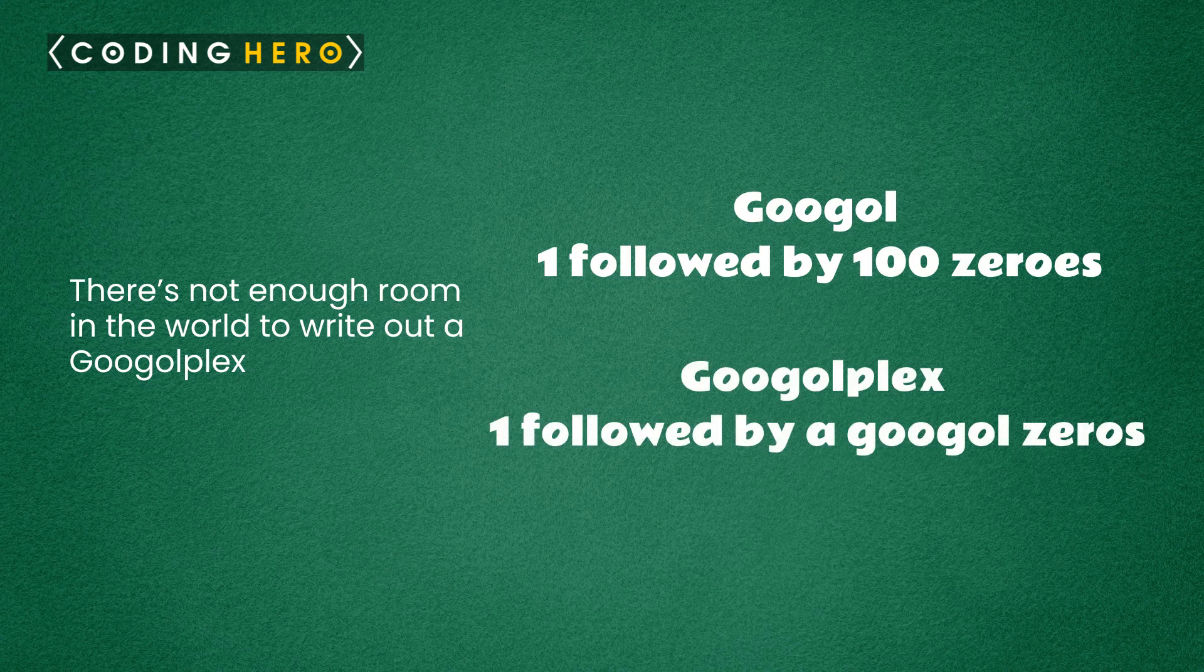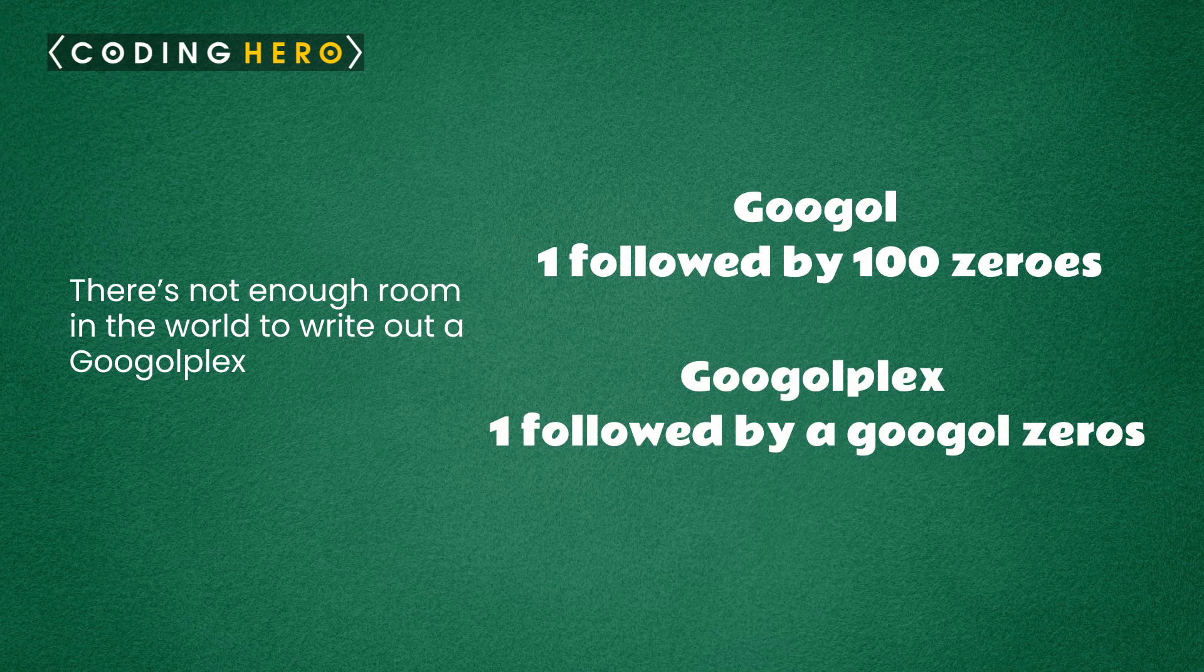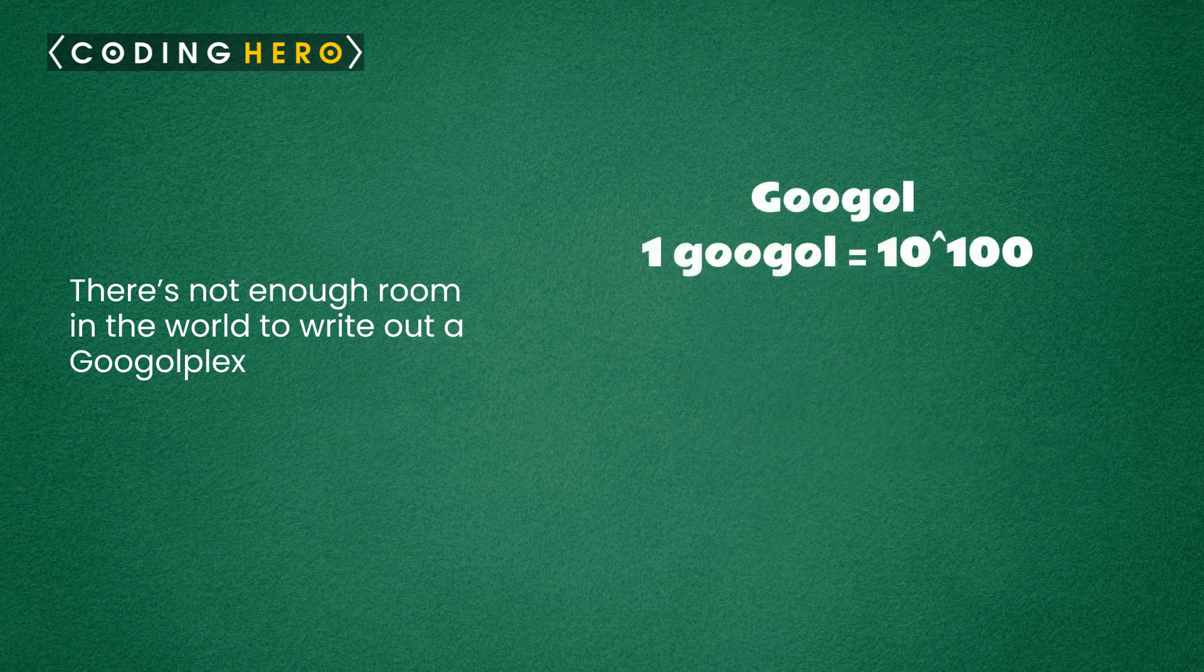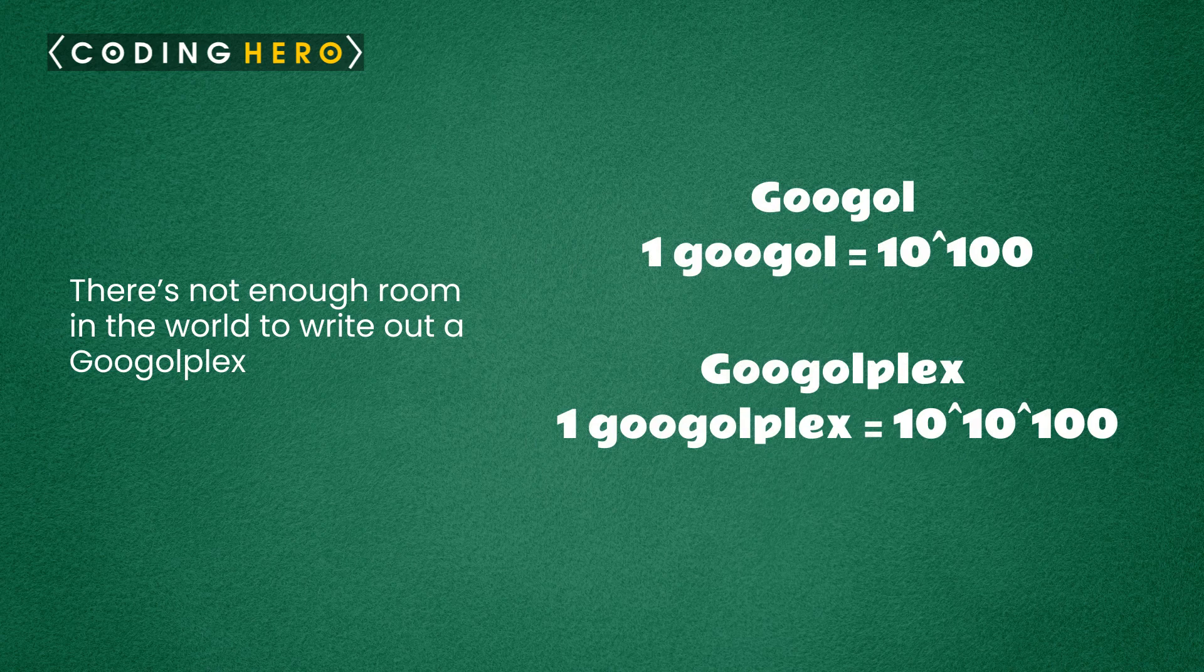A googolplex is 1 followed by a googol zeros. One googol is equal to 10 to the power 100, so one googolplex is 10 to the power 10 to the power 100.